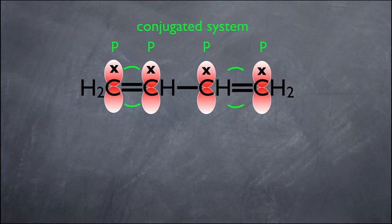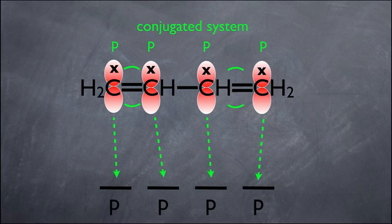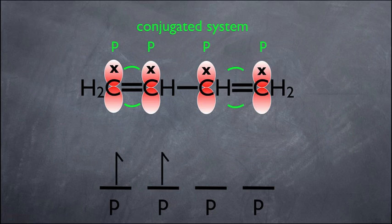One way to represent a conjugated system is using molecular orbital theory. Those dashes become orbitals, and what we're saying is we have four total p orbitals, each with an electron in it. Molecular orbital theory represents electrons as little half-headed arrows. So the essence of every simple conjugated system is four p orbitals, each with an electron in each orbital.